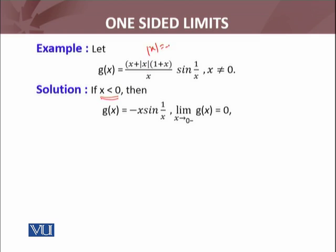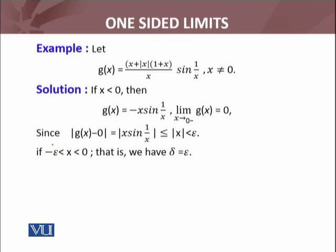If x is negative, then |x| = -x, so g(x) becomes x + (-x) - x²/x = -x·sin(1/x). The left-sided limit as x → 0⁻ of g(x) equals 0, because |g(x) - 0| = |x·sin(1/x)| ≤ |x|, since |sin(1/x)| ≤ 1. Setting δ = ε, whenever -δ < x < 0 we get the bound. So the left-sided limit of the function is 0.